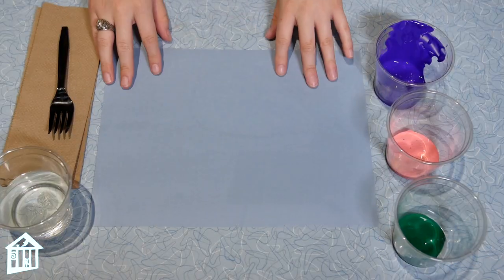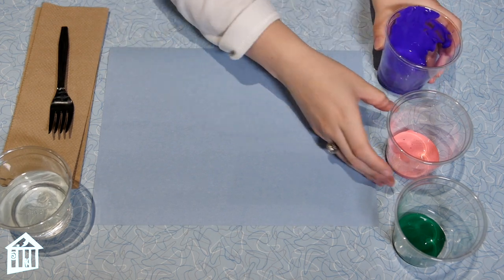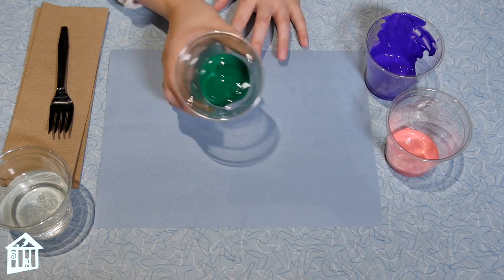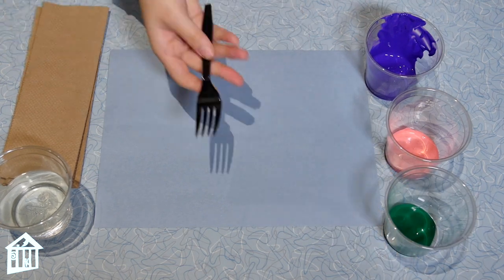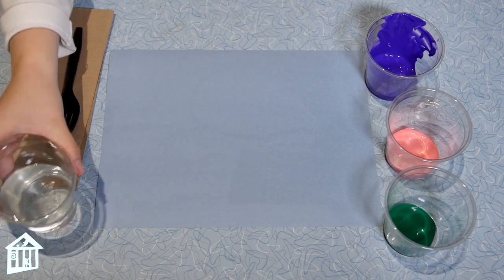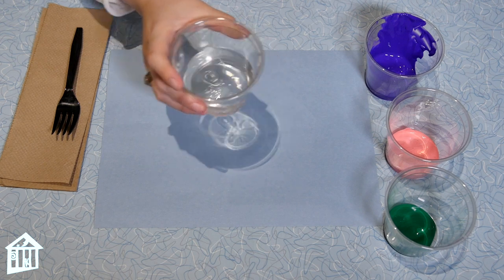For this activity you're going to need a piece of paper, different colored paints. I'm using purple, pink for my petals, and I'm using green for my stems. You're also going to need your plastic fork, paper towels to clean up, and a glass of water to rinse out your fork in between the paints.